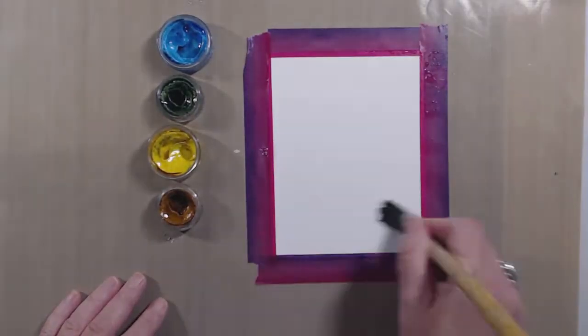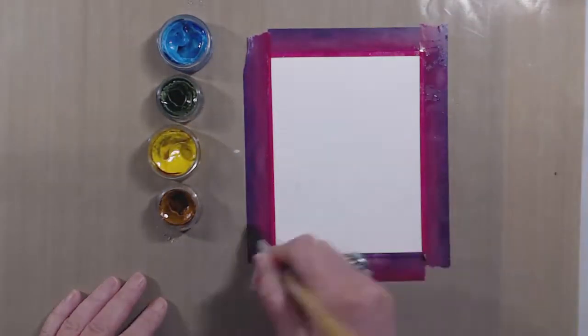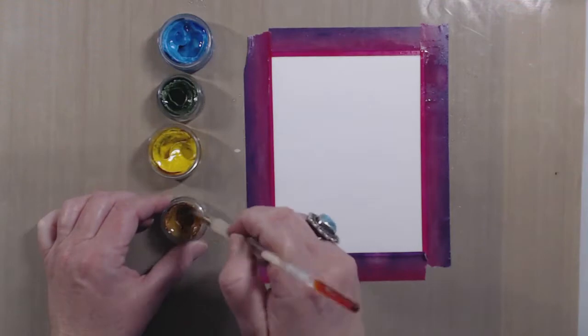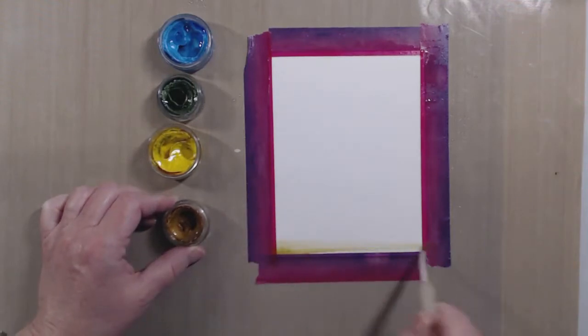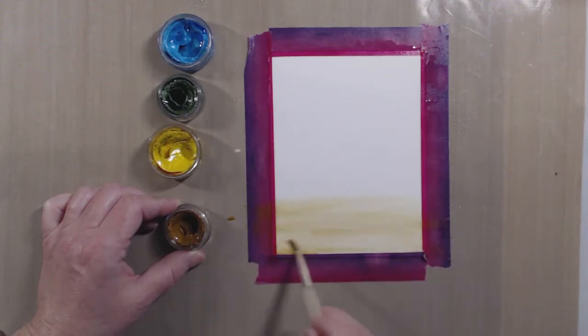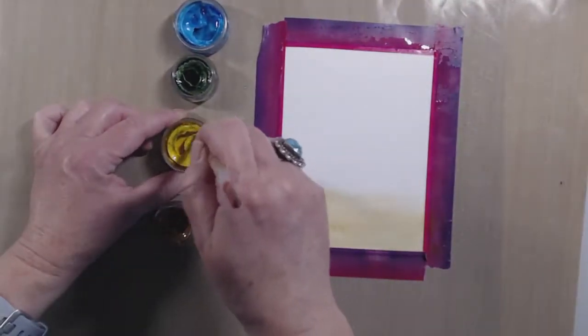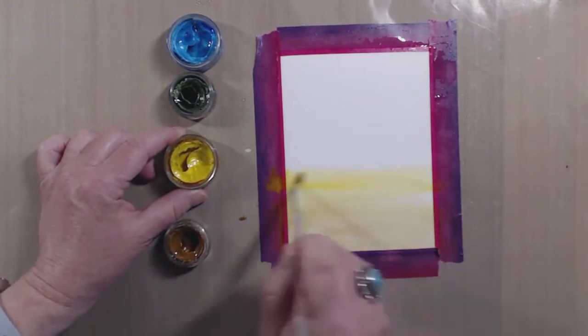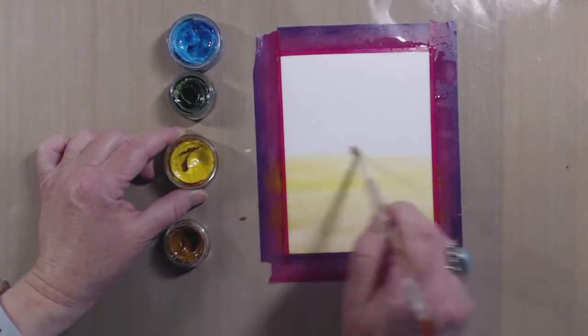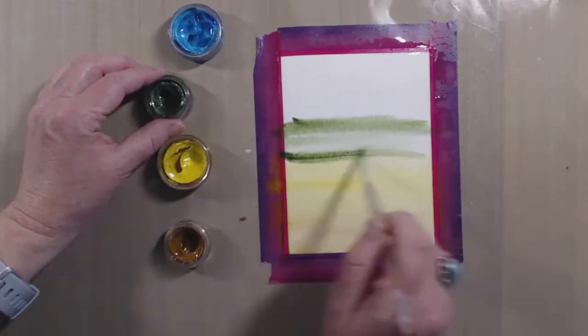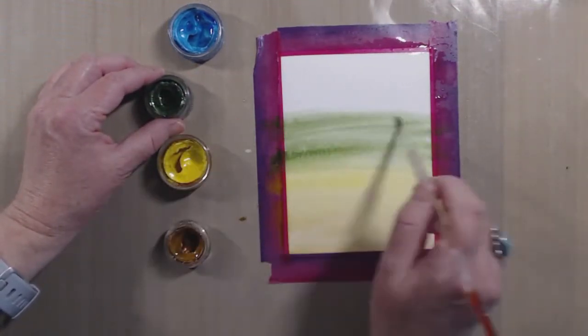I'm starting by wetting the watercolor paper. This will keep the color soft and will allow them to blend. This isn't a super technical process here. I'm just going to be putting down the watercolor paint, blending those colors together. I'll go over it a couple of different times just to give a little bit more pigmentation on the paper.